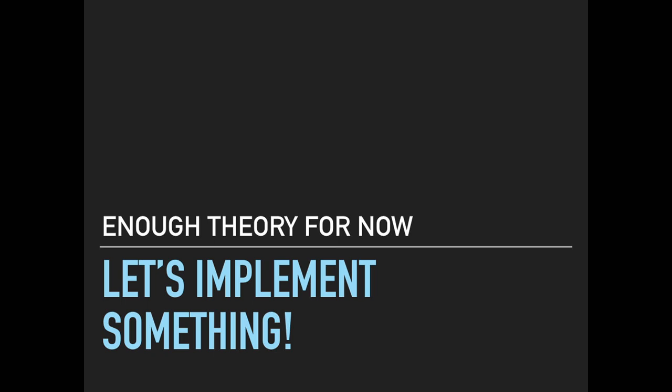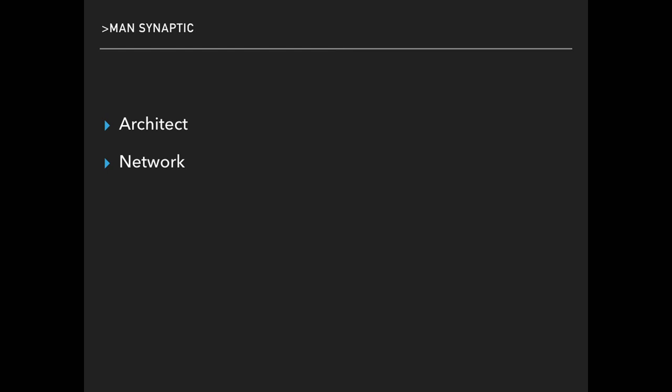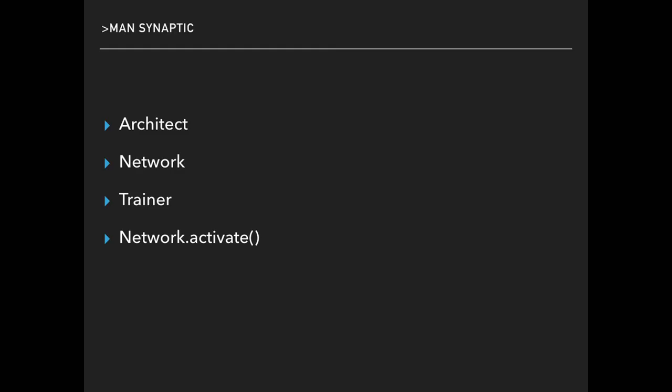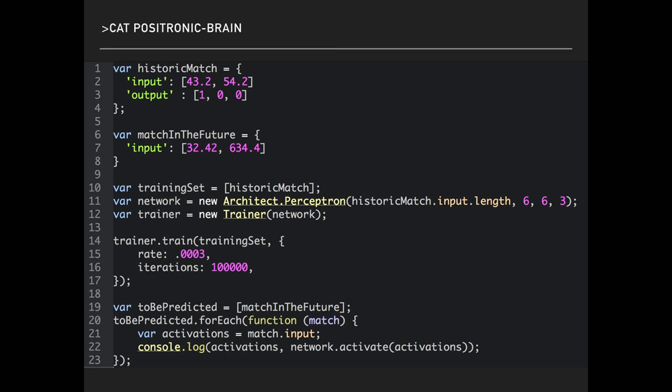That was a lot of theory, so let's implement something — and you'll see it's really not that hard. I use Synaptic because it does all that stuff I showed you and I don't really have to care about it. It's a framework to do stuff with the neural network. It gives us everything we need to build a simple network. We have an Architect that will build our network, a Trainer that will train our network with the training examples we provide, and we can make predictions with our trained network by calling the function activate.